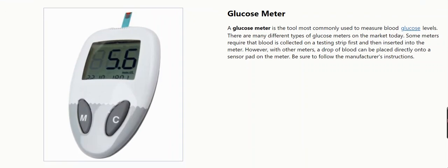A glucose meter is the tool most commonly used to measure blood glucose levels. There are many different types of glucose meters on the market today. Some meters require that blood is collected on a testing strip first and then inserted into the meter. However, with other meters, a drop of blood can be placed directly onto a sensor pad on the meter.